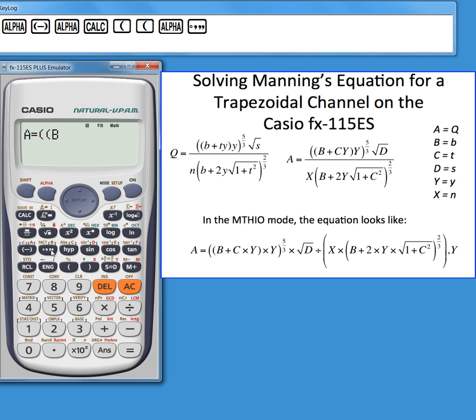A is being used to represent q, plus t times y, but in this case t is really variable c on the Casio and y is y. Close the parentheses and multiply that again by y.